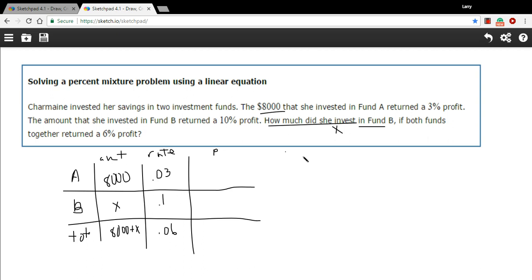And then finally we have our profit. So let's see. Well, the profit is easy to calculate here. It's just 8,000 times 0.03. And here it's 0.1 times X. I'll just write that as 0.1X. And here our profit is going to be 0.06 times 8,000 plus X. And the trick to this one is that these two added together should equal this. The profit from each of the funds added together should equal the profit of the totals.